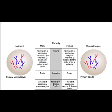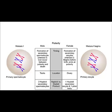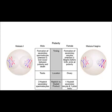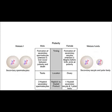Meiosis I does not begin until puberty in the testis of the male. Meiosis I begins before birth and ends at puberty in the ovary of the female.